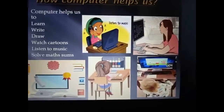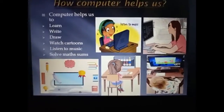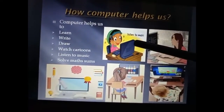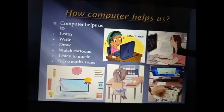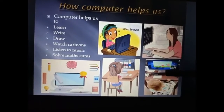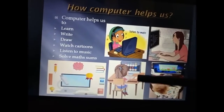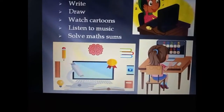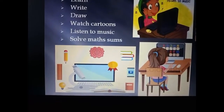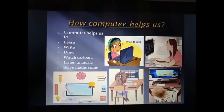Now let's look at the pictures on the screen. The first picture shows listening to music — this child is listening to music. Another child is doing some work on the computer. Another is watching a cartoon. One is learning something with the help of a game. We can find and perform different types of tasks on a computer.